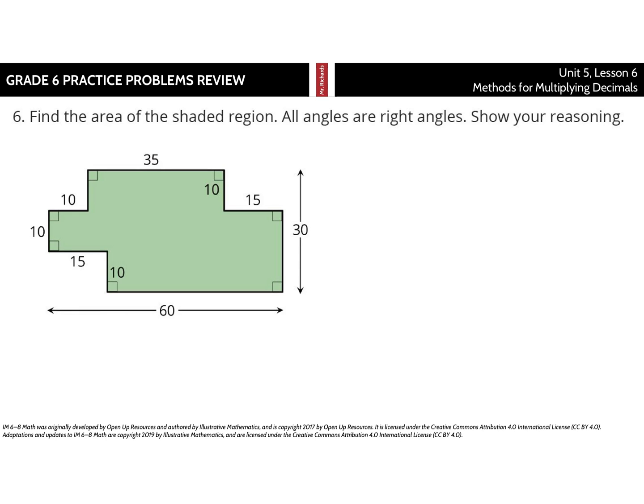Find the area of the shaded region. All angles are right angles. Show your reasoning. Let's divide this thing into rectangles, because we can find the area of rectangles using length times width. If I'm going to call this rectangle A up here, just to keep my work organized, for A, my area is going to equal 35 times 10, which is 350.